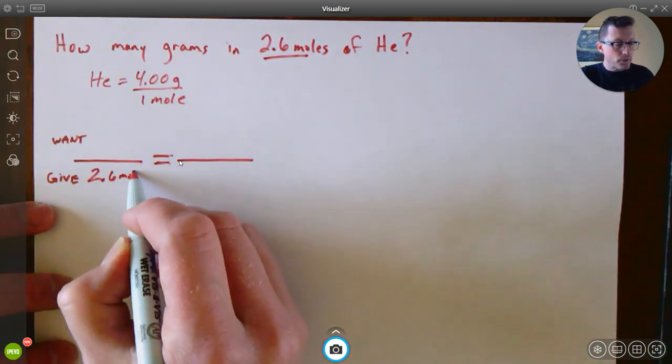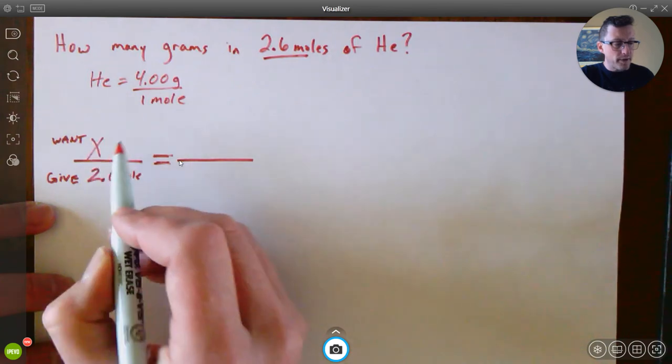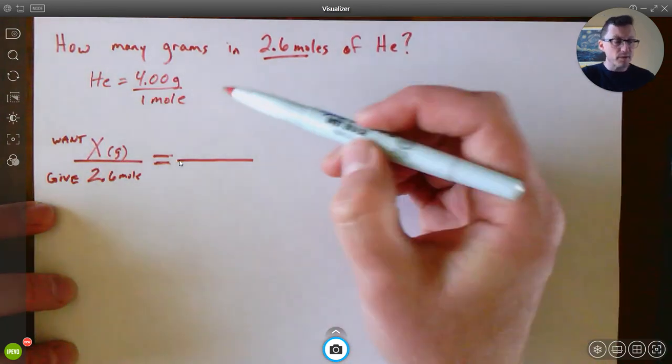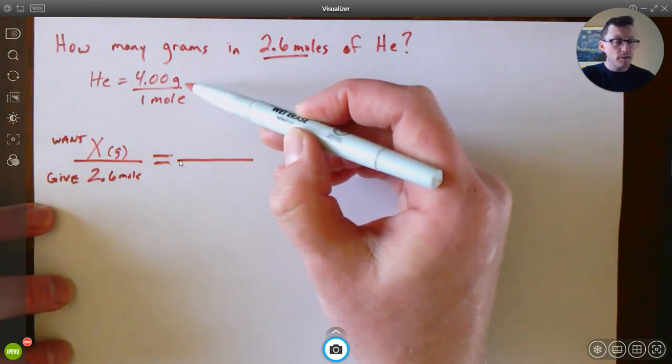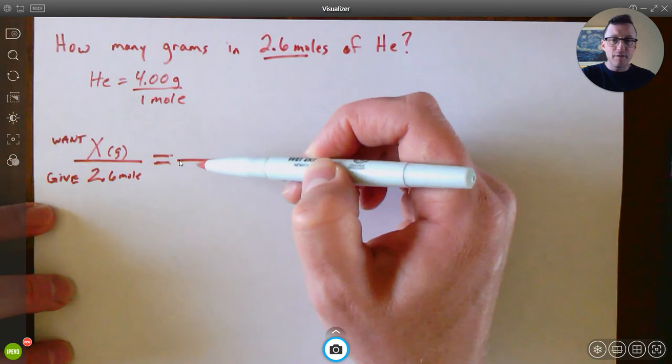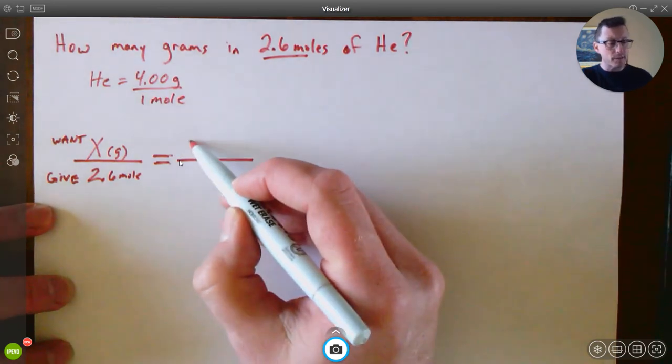Question gives me moles, so I'm going to put 2.6 moles here and then the want is always my X. In this case it's going to be grams. Now the reason that's important is because when I use my molar mass I need to make sure on this, notice how it's a fraction, right? If I have grams on top here, I'm going to make sure I have grams on the top there.